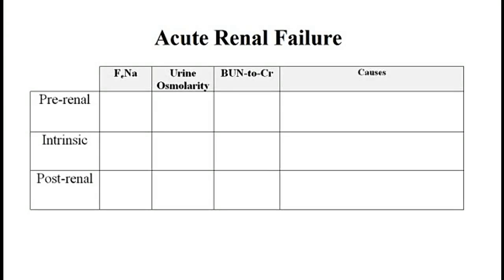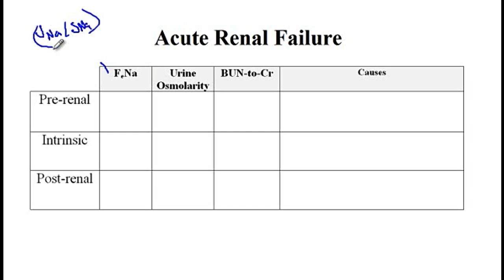In this video, I'm going to discuss different forms of acute renal failure, which includes the pre-renal, intrinsic, and post-renal forms, discuss their causes, and then how they affect different lab values such as the fractional excretion of sodium, calculated as urinary sodium divided by serum sodium, divided by urinary creatinine divided by serum creatinine, urine osmolarity, and the BUN to creatinine ratio.